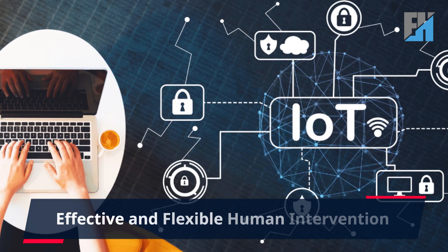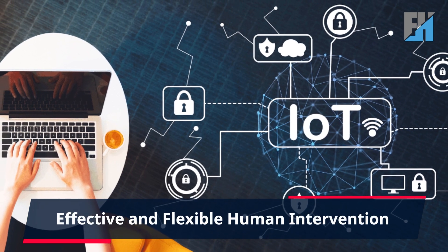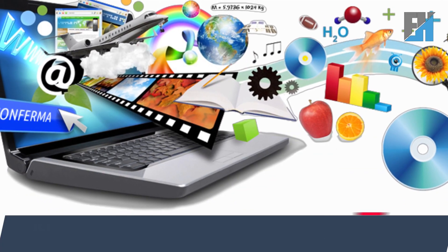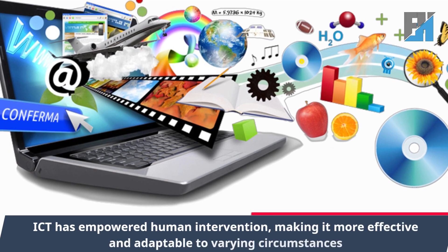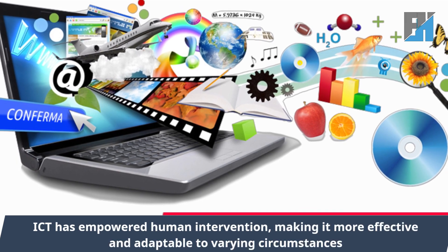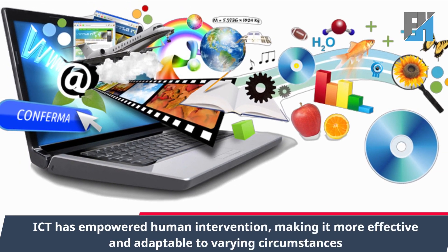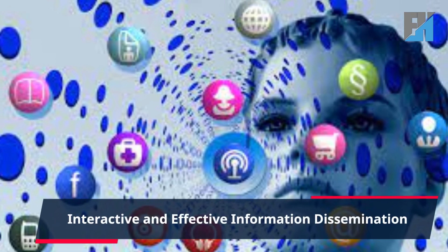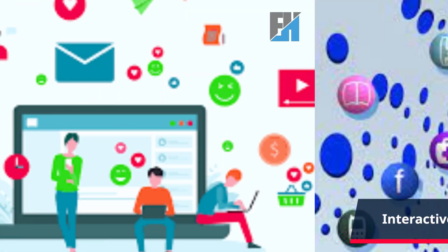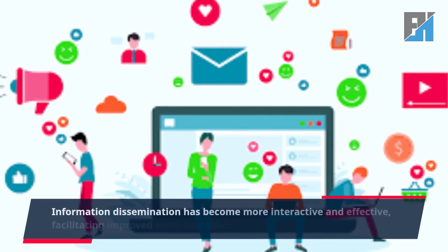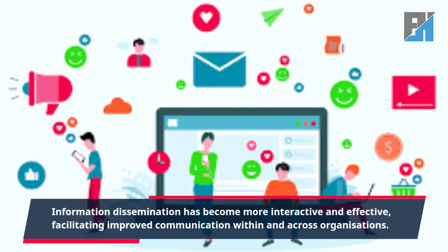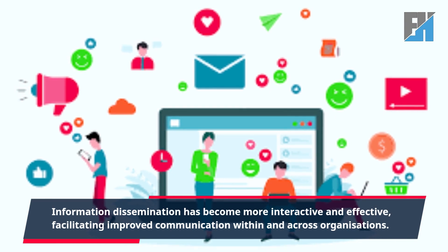3. Effective and flexible human intervention: ICT has empowered human intervention, making it more effective and adaptable to varying circumstances. 4. Interactive and effective information dissemination: Information dissemination has become more interactive and effective, facilitating improved communication within and across organizations.